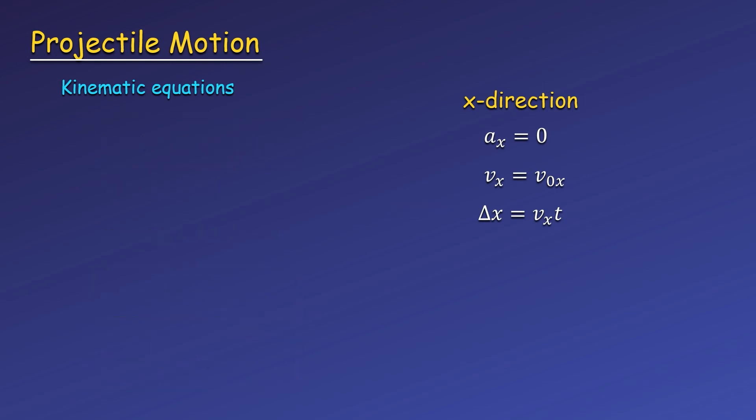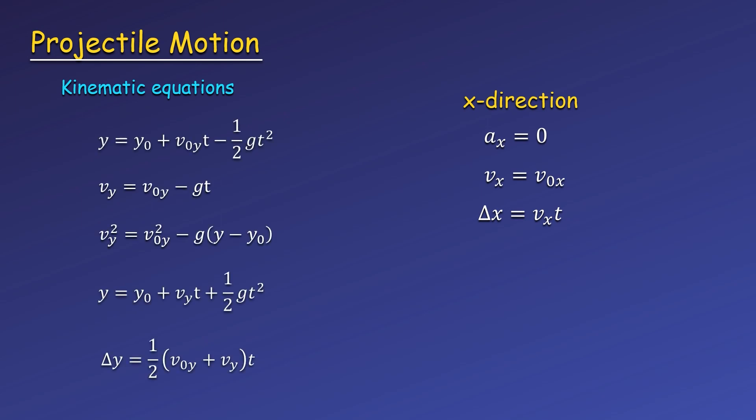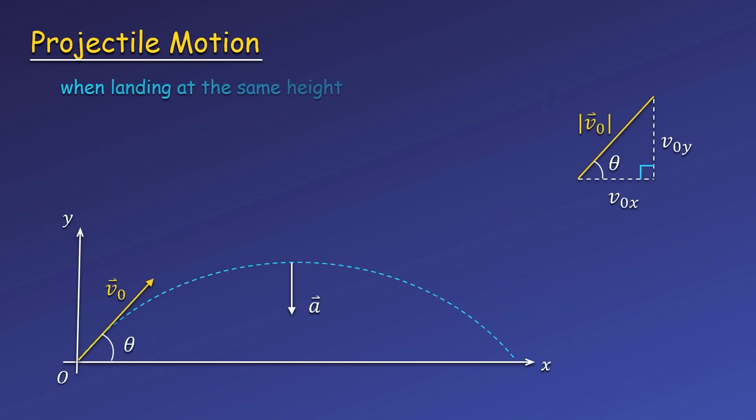Now we can look at the kinematic equations in terms of y and plug in minus g for the acceleration. These are the exact same equations we get for free fall, and we can use any of these depending on what information is known and what we are looking for. In free fall, we looked at what happened when an object lands at the same height it was launched from. We saw that the time the object spends on the way up is the same as on the way down, and the speed at each height on the way up is the same as on the way down. This is because the acceleration is constant — the same on the way up as on the way down.